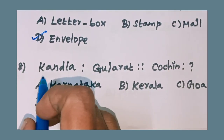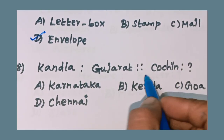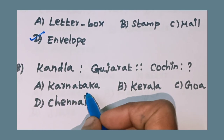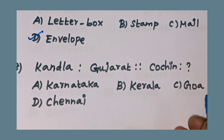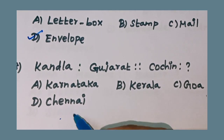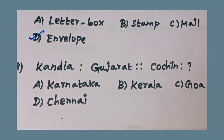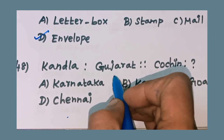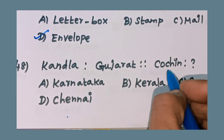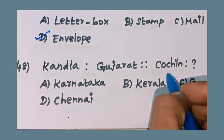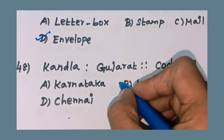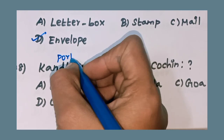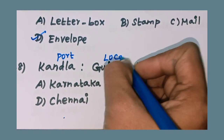48th question: Kandla is to Gujarat as Cochin is to question mark. Option A: Karnataka, Option B: Kerala, Option C: Goa, Option D: Chandigarh. Kandla is the port, its location is Gujarat. Cochin is the port, its location is Option B: Kerala. This is a port and location concept.